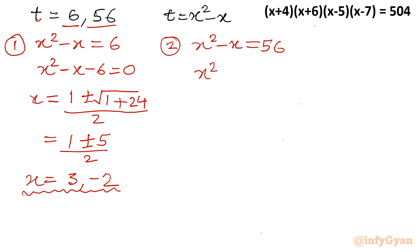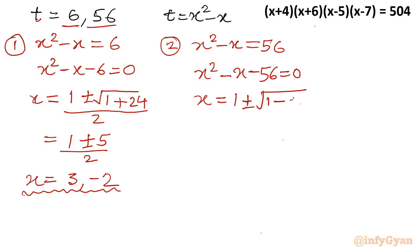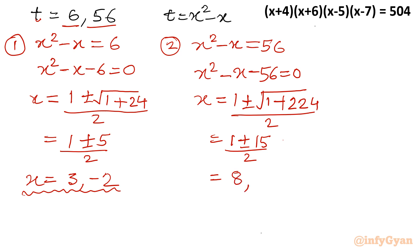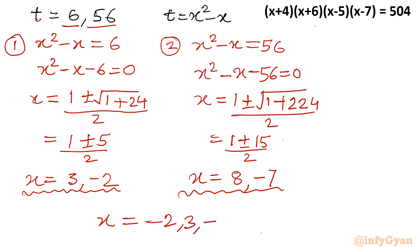For Equation 2: x²-x-56 = 0. Applying the quadratic formula: x = (1 ± √(1+224))/2 = (1 ± 15)/2. Taking the plus sign gives x = 16/2 = 8, and the minus sign gives x = -14/2 = -7. So the four solutions of the quartic equation are x = -2, 3, -7, and 8. You can verify by substituting each value back into the original equation.